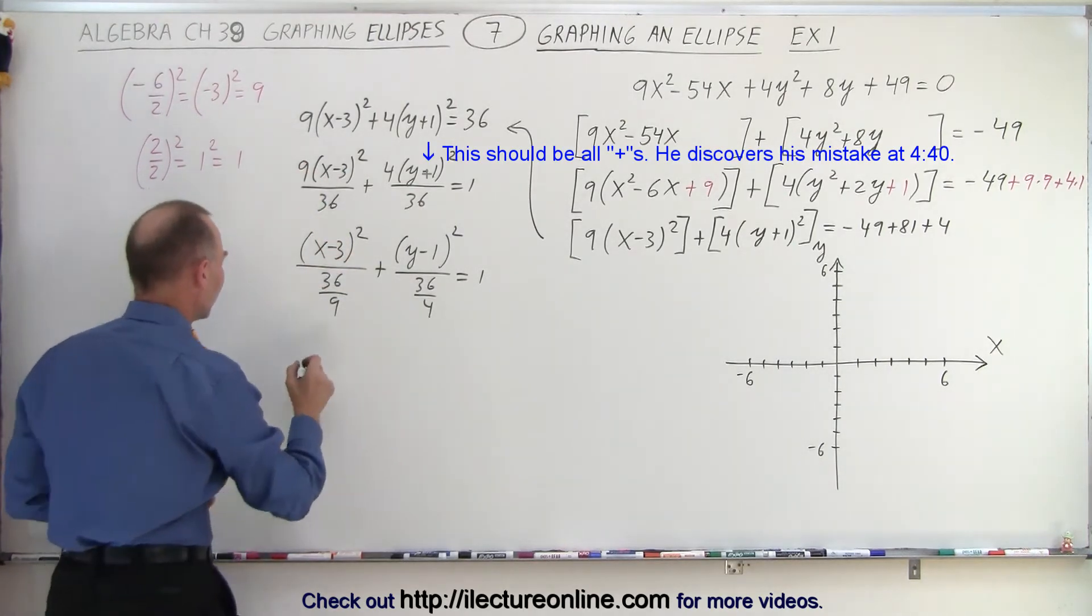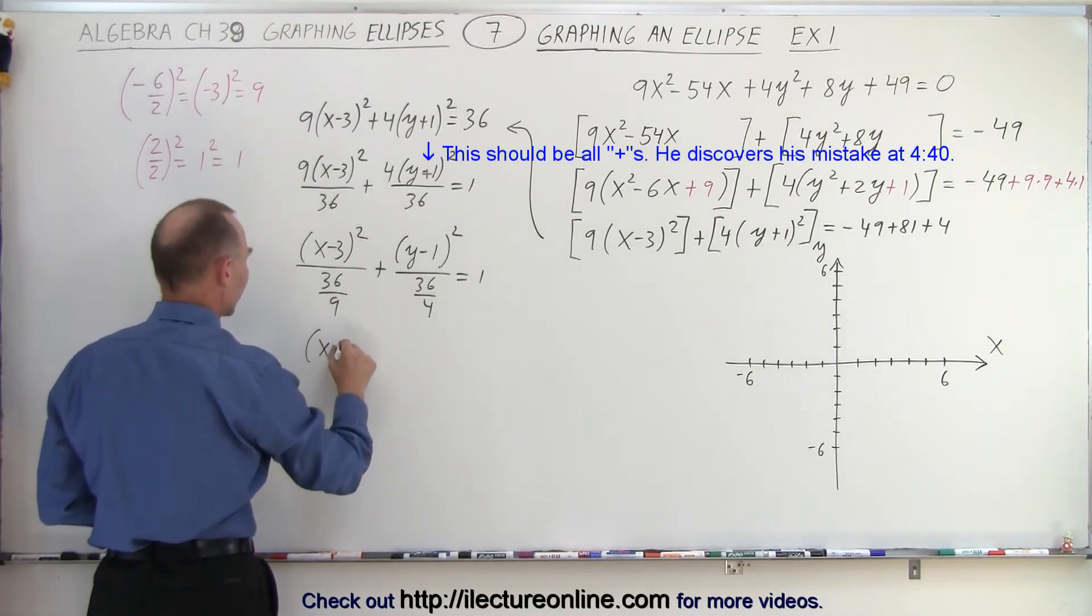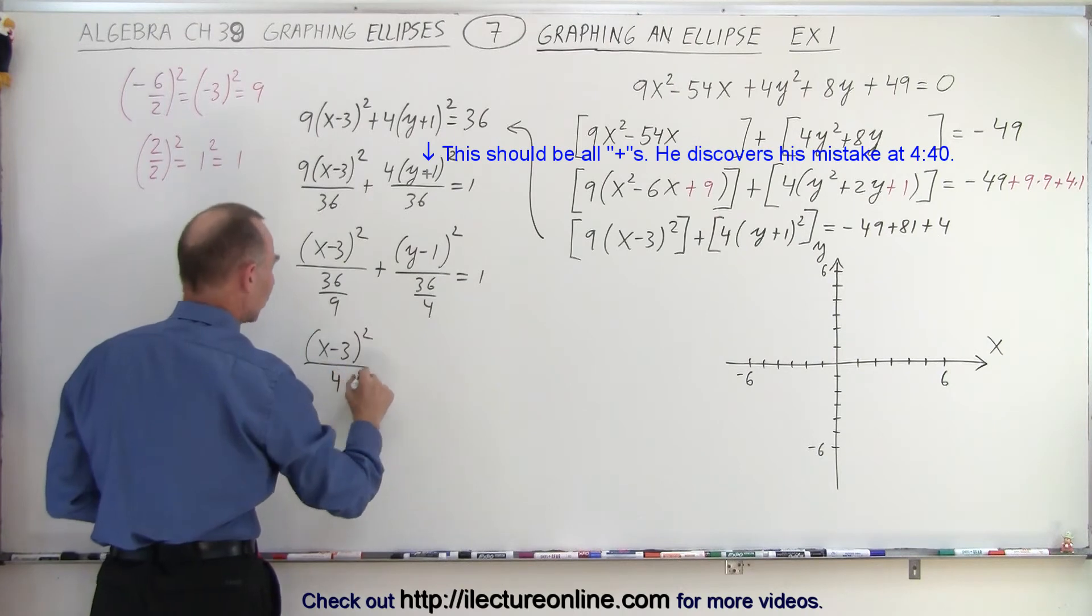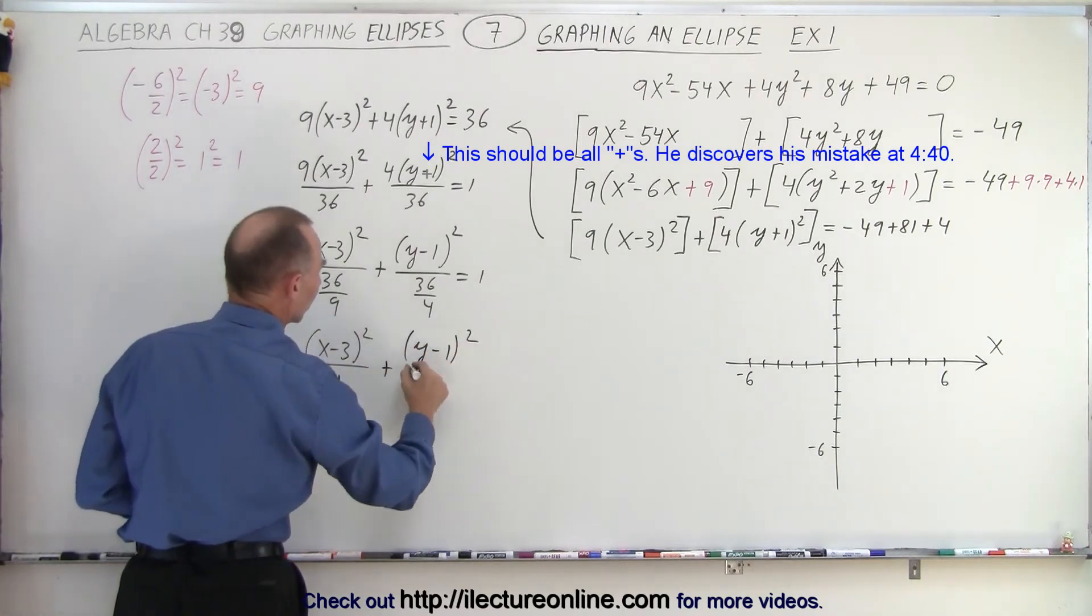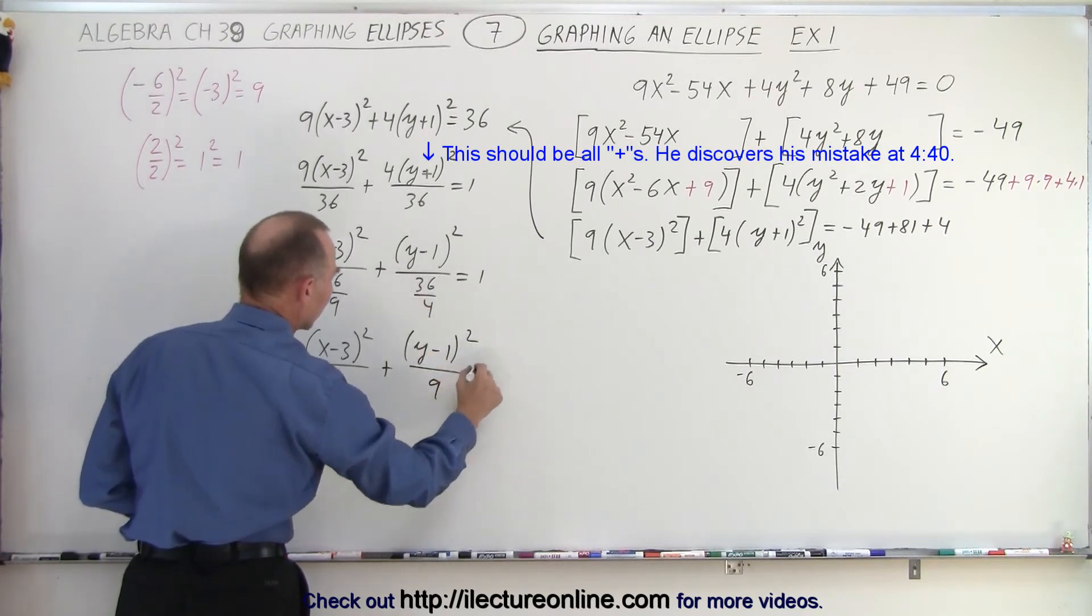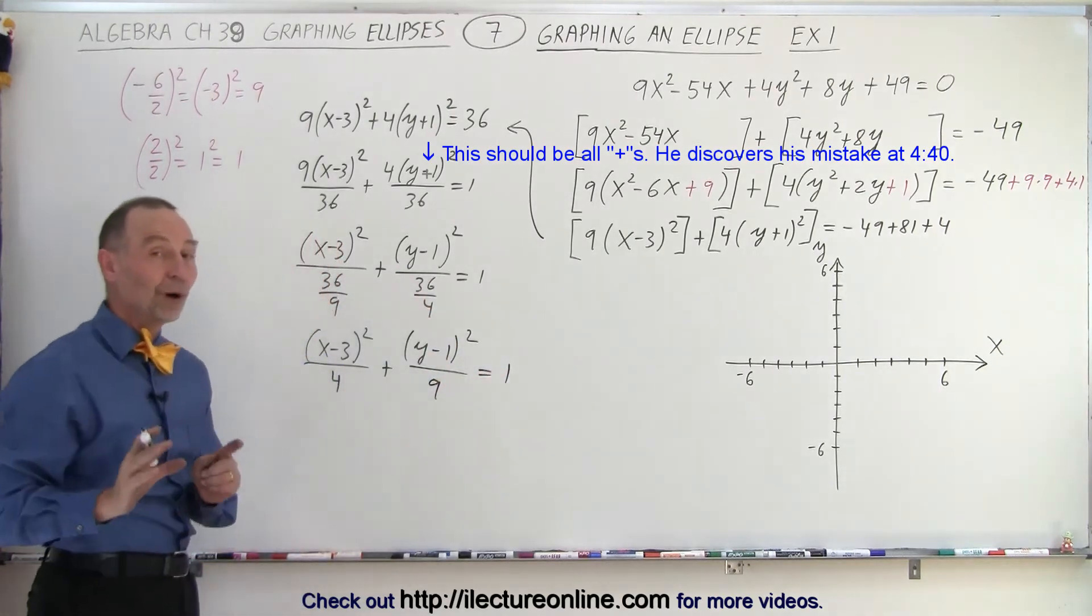And simplifying this we get the following. So this can be written as x minus 3 squared over 36 divided by 9, which is 4, plus y minus 1 squared divided by 9 equals 1. Now we have to do one more step. That's still not quite the final form.